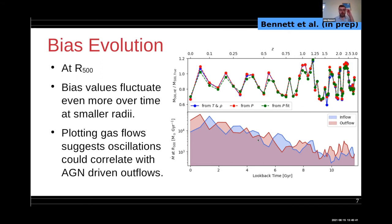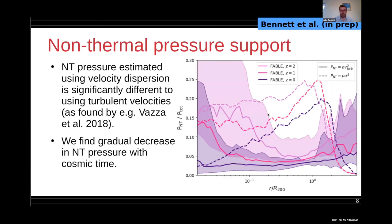If we look at actual non-thermal pressure that you actually get at this point, it depends on how you estimate it, as Frank Vazza has found amongst other people. If you use velocity dispersions like in this dashed line, you end up with a much higher estimate of non-thermal pressure fraction than if you use turbulent velocities. But the general trend is similar. They increase as a function of radius roughly out just beyond the virial radius, and they decrease as a function of time. Towards redshift zero you end up with thermal pressure dominating much more as you go to lower redshift.